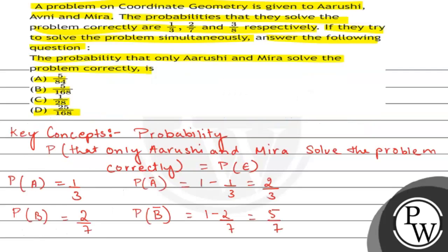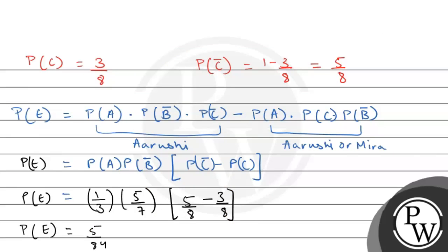The probability that only Aryoshi and Mira solve the problem correctly is 5/84. Checking the options, this satisfies option A. Therefore, option A is the correct answer. Hope you all understand well. Best of luck. Thank you.